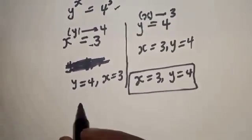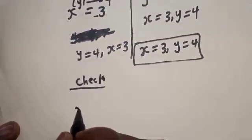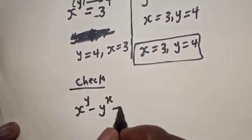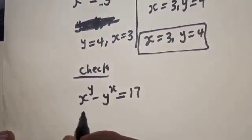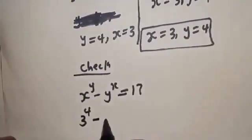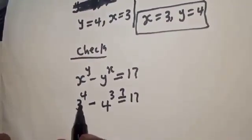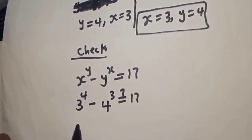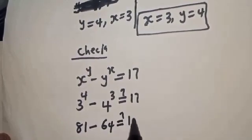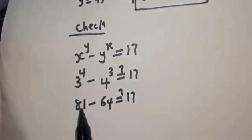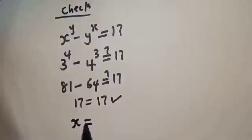Let's check to confirm our answer. With S equals 3 and Y equals 4 in the original equation: S raised to power Y minus Y raised to power S must equal 17. So 3 raised to power 4 minus 4 raised to power 3 equals 81 minus 64, which equals 17. This equals 17, which satisfies the given equation. So S equals 3 and Y equals 4 is confirmed correct.